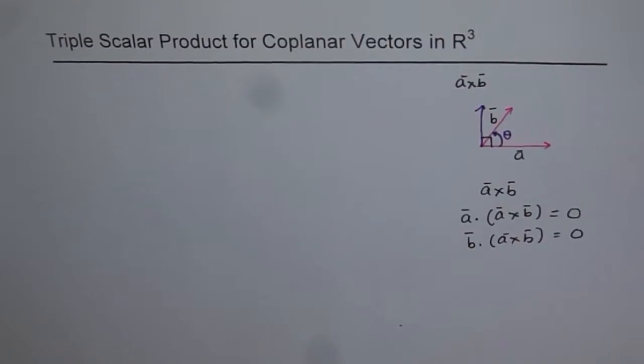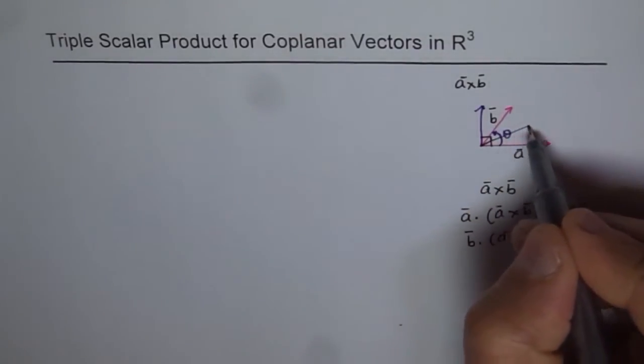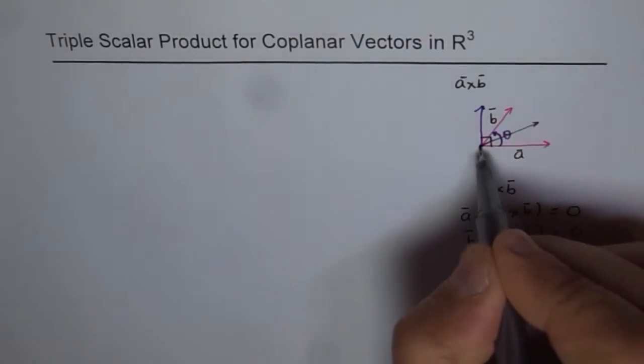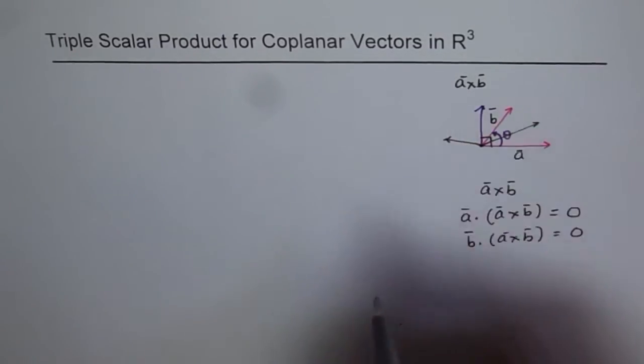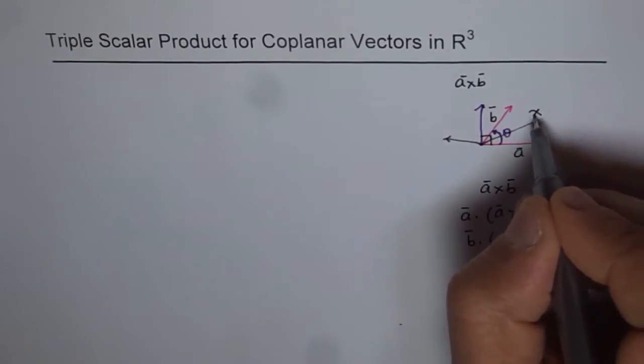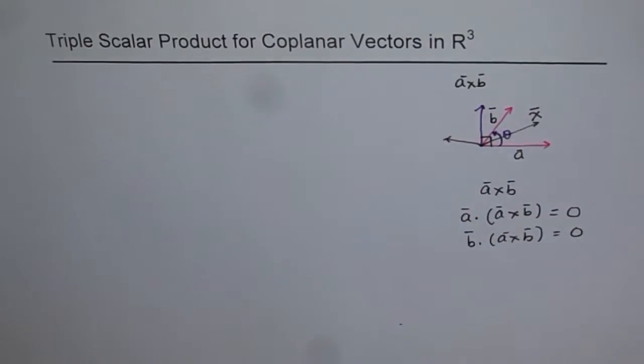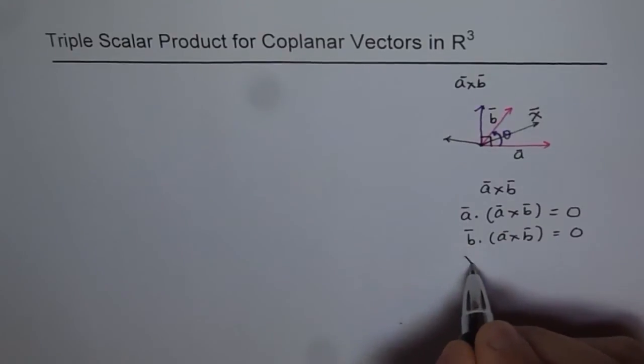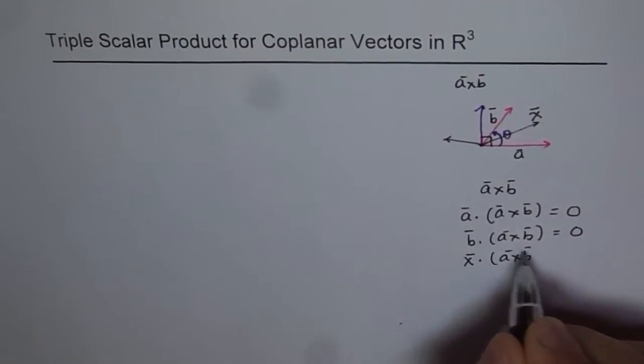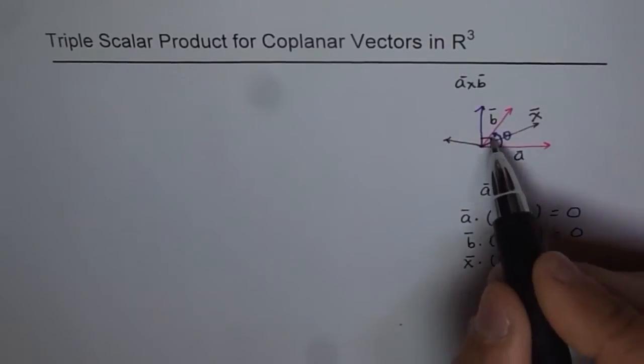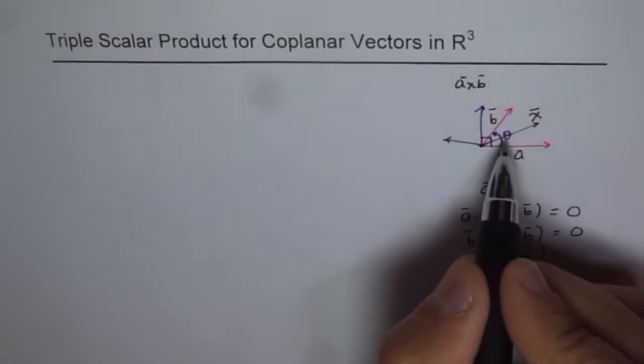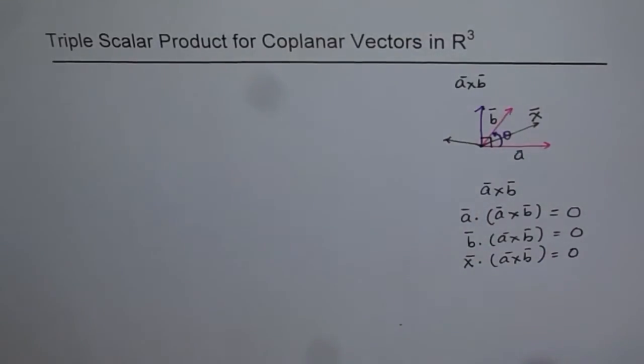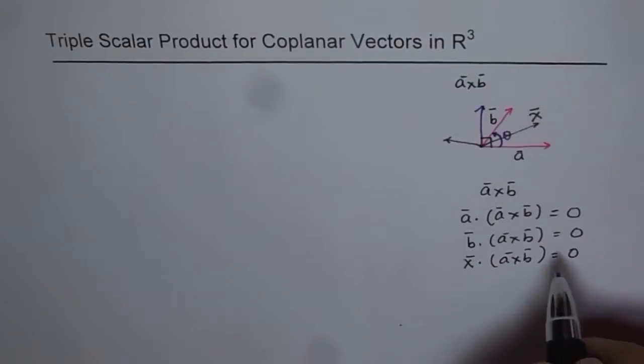Now, if I have a third vector also in the same plane, let's say somewhere here, or for that matter here, but in the same plane, and let's say this vector is x, any vector x for us. Then what do you think will be x dot (A cross B)? The angle between this vector A cross B and x is also going to be 90 degrees. So this is also zero. So in all these cases, all the vectors in the plane of A and B will be perpendicular to A cross B.